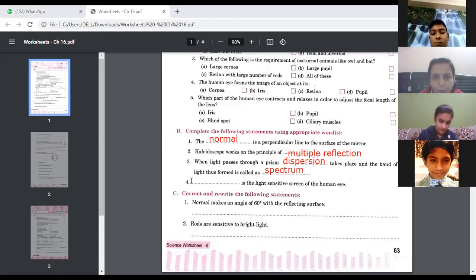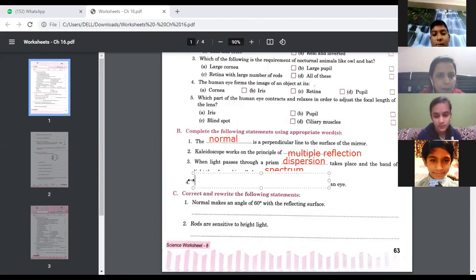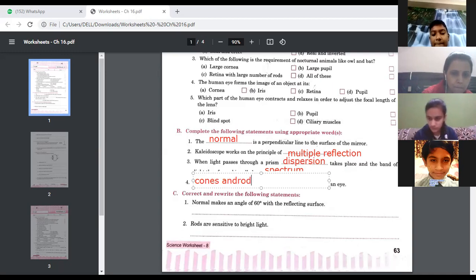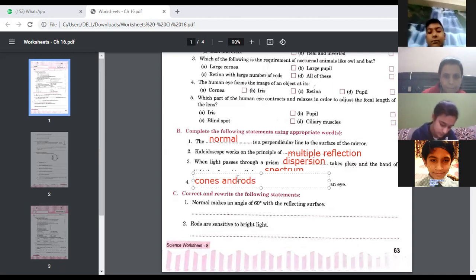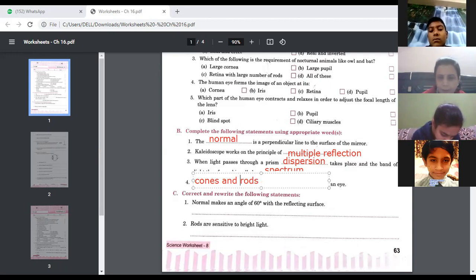Number four, blank is a light sensitive screen of the human eye. Yes, cones and rods. Cones and rods. These are the light sensitive cells.